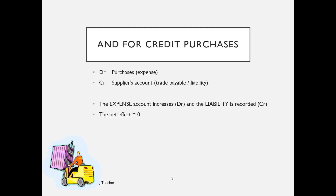For credit purchases, we still debit purchases — always debit purchases — and then credit the supplier's account, setting up an account in the name of the supplier to whom we owe money. The purchases expense account is increased and we record a liability on the credit side. No cash has changed hands at this point, so the bank and cash accounts are not involved at this stage.